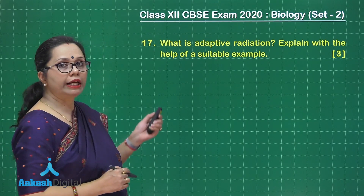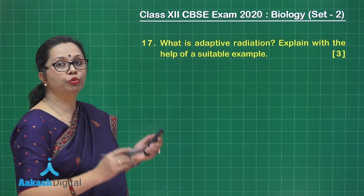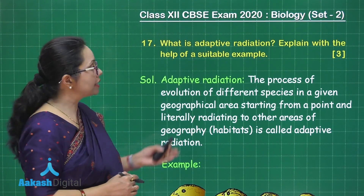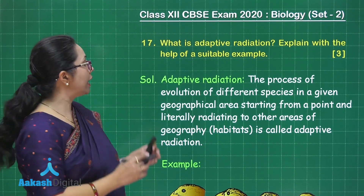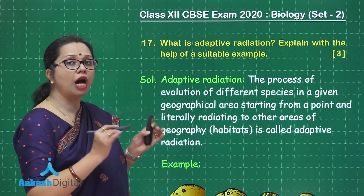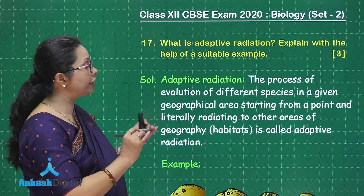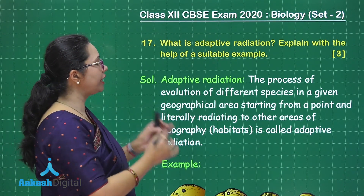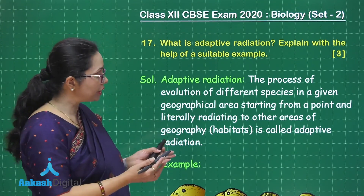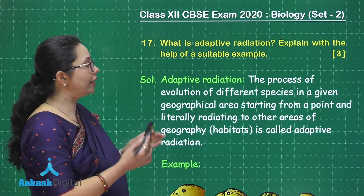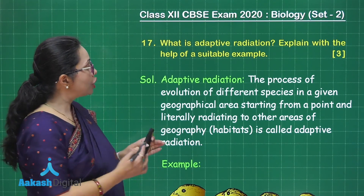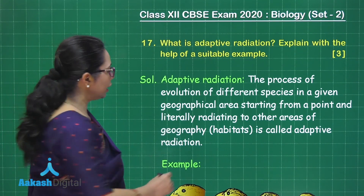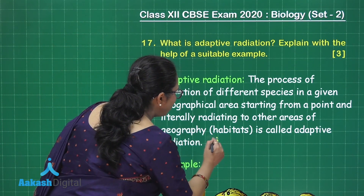The first part of the question simply asks you to write the definition of adaptive radiation, which is: the process of evolution of different species in a given geographical area, starting from an ancestral species and literally radiating to other areas of geography — the habitat where the organism lives. It is a very rapid method of speciation. Writing the definition correctly will fetch you one mark.